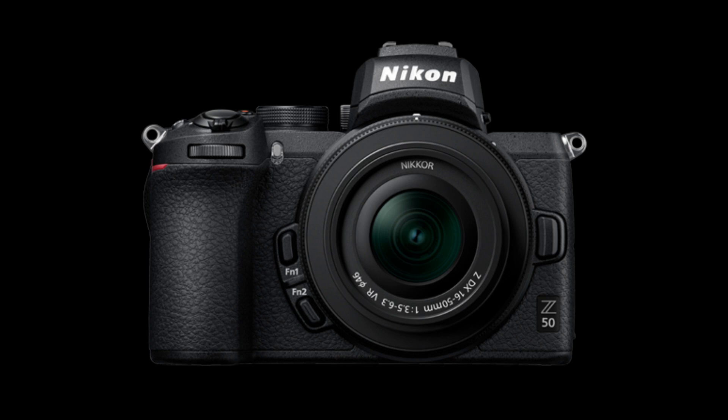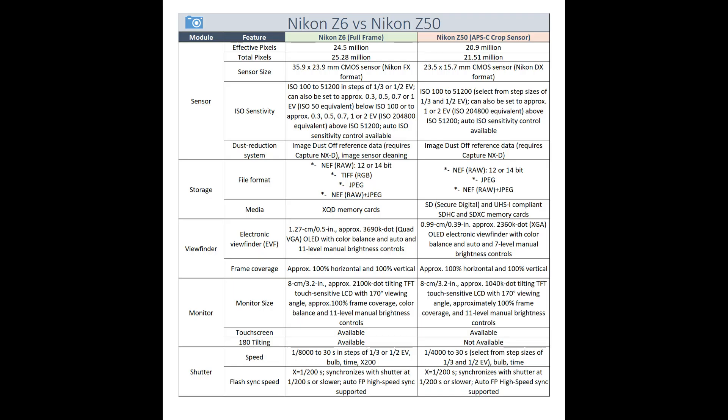Welcome back to my YouTube channel. Nikon has finally announced the Nikon Z50, which is an APS-C mirrorless camera. It is out in the market now and is a bit more compact and smaller in size than the Nikon Z6 and Z7. Let's see how it compares to the Nikon Z6 as far as specifications are concerned — I'll go through each spec one by one.